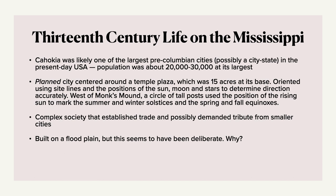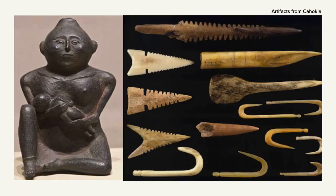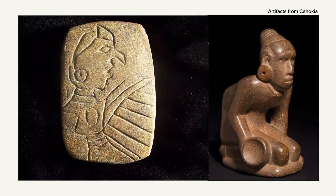West of Monk's Mound, there's a circle of tall posts which use the position of the rising sun to mark the summer and winter solstices and the spring and fall equinoxes — they're using their architecture to mark the passage of time, probably largely for agriculture. They had a complex society that established trade and possibly demanded tribute from smaller cities. The city was built on a flood plain, which seems deliberate — possibly to make the soil more nutritious for agriculture. It may also have been used in religious pilgrimages, and there is possible evidence of ritual human sacrifice, though we don't know for certain. Here are some artifacts from Cahokia: arrowheads, hooks showing evidence of fishing, spheres and hunting evidence, and a sculpture of a mother nursing her child.